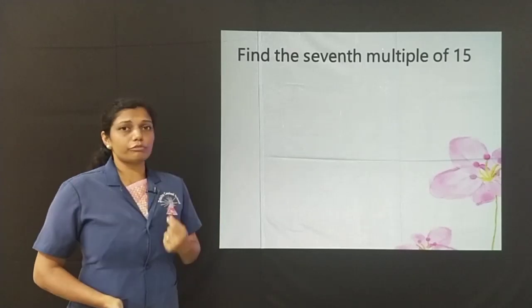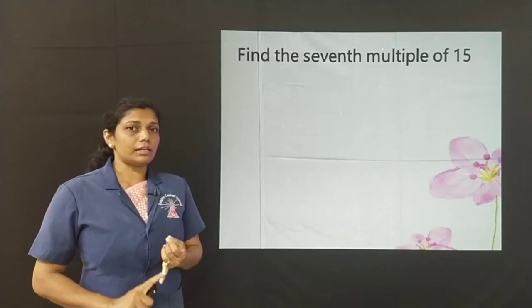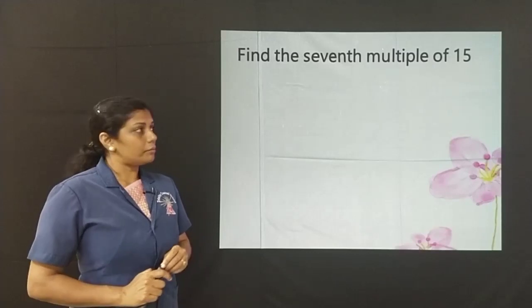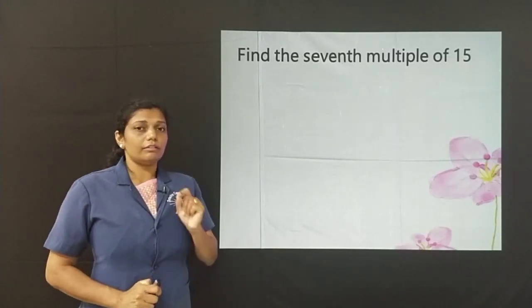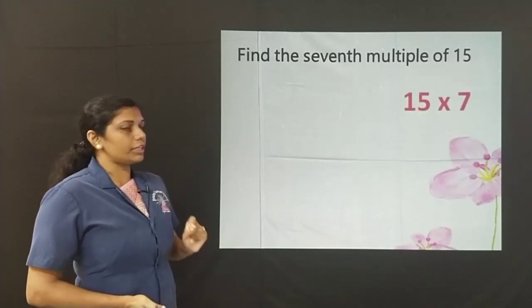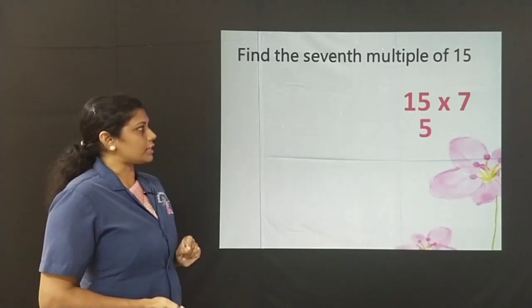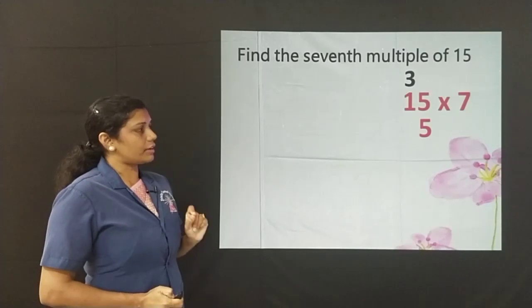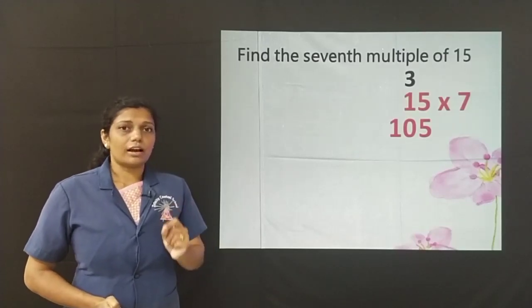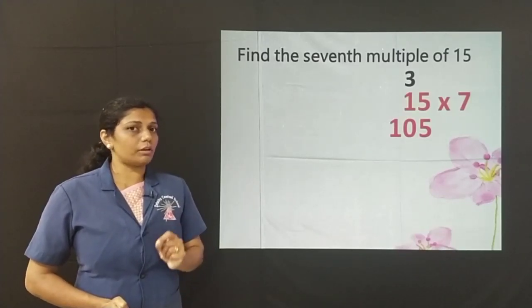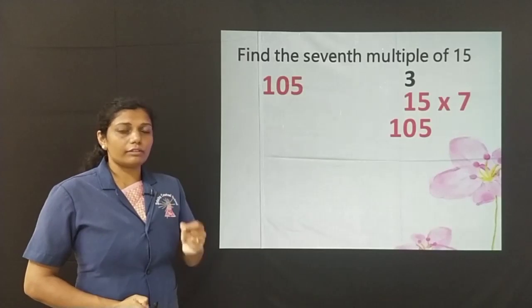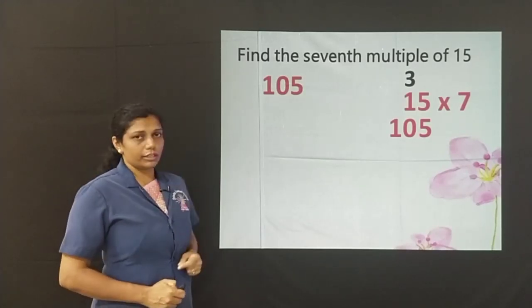Find the 7th multiple of 15. The first multiple is 15, second multiple is 30, third multiple is 45 and it continues. But they have asked us to write the 7th multiple, which can be found by multiplying 15 with 7. So, 15 into 7: 7 fives are 35, write 5 carry 3, 7 ones are 7 plus 3 is 10. So, 15 into 7 is 105. So, 105 is the 7th multiple of 15. Clear, children?